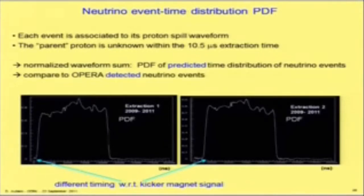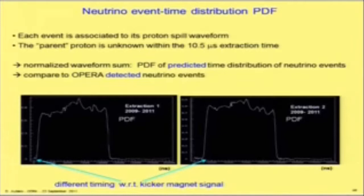We don't know within the spill which is the proton that produced the neutrino which interacts in Gran Sasso. So we can perform this measurement of the neutrino velocity in a statistical way by comparing the distribution of neutrinos in Gran Sasso to the waveforms recorded at CERN. In order to do that, we sum all the waveforms corresponding to the events recorded by OPERA.